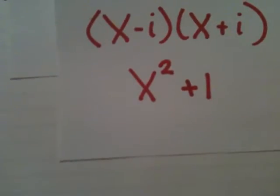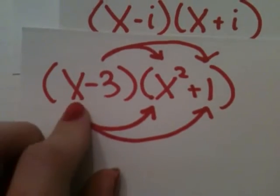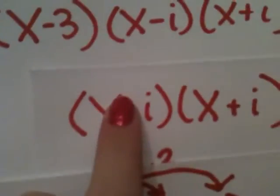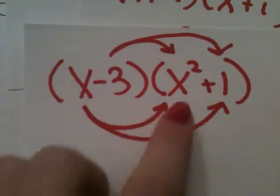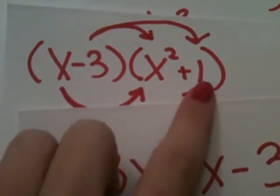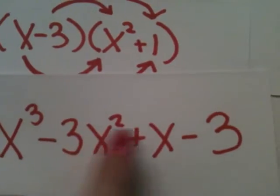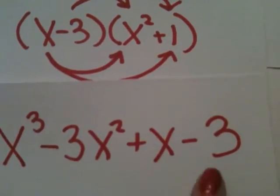Now that you have that, you need to multiply it by your x minus 3. And I'm just showing here the FOIL method, and that's exactly what I did here. x times x squared gives you x cubed. x times positive 1. And a negative 3 times x squared. And a negative 3 times a positive 1 gives you a negative 3.